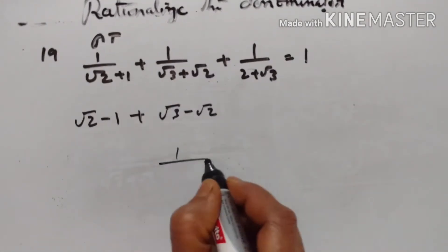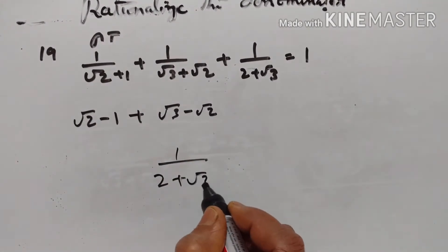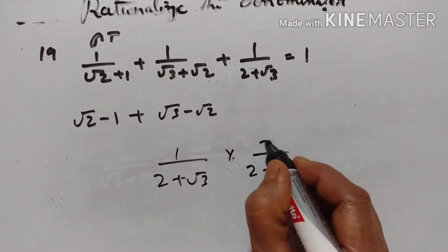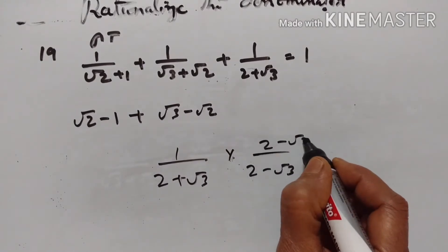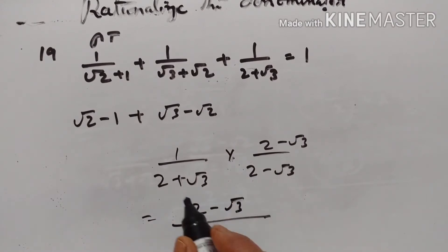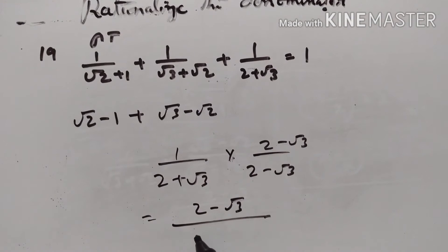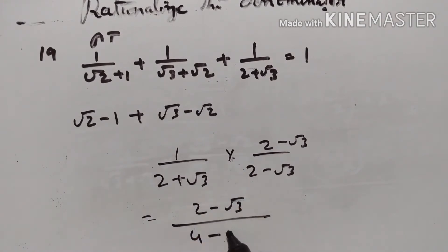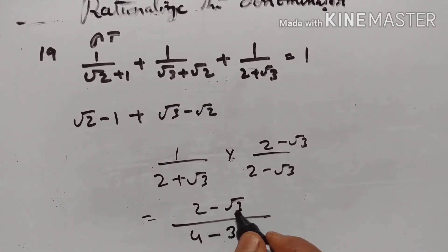Now the third term: 1 upon 2 plus square root of 3, multiplied by 2 minus square root of 3 over 2 minus square root of 3. Using a squared minus b squared, a squared is 4 and b squared is 3, so 4 minus 3 equals 1. Therefore the value is equal to 2 minus square root of 3.